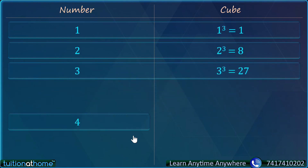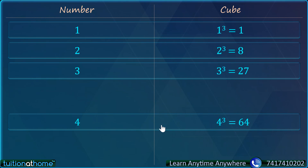4 cube is 64. You have to remember cubes of 1 to 10 numbers — they are very, very important, just the way we have remembered the squares of 1 to 30. Similarly, you should remember cubes of 1 to 10.